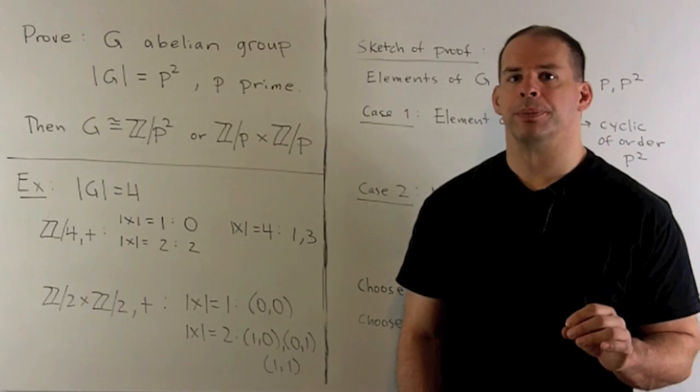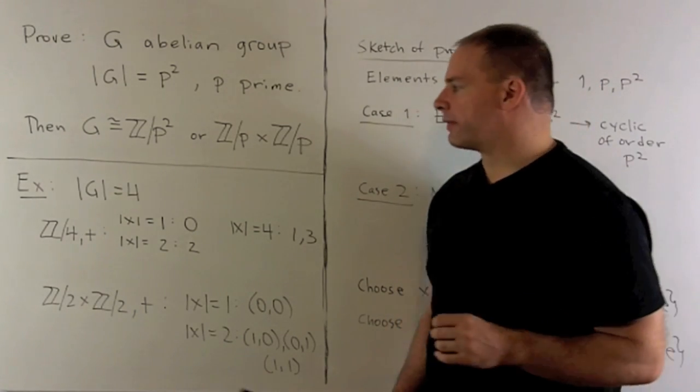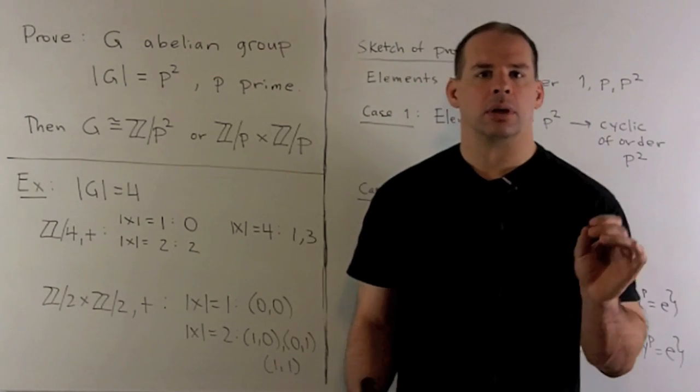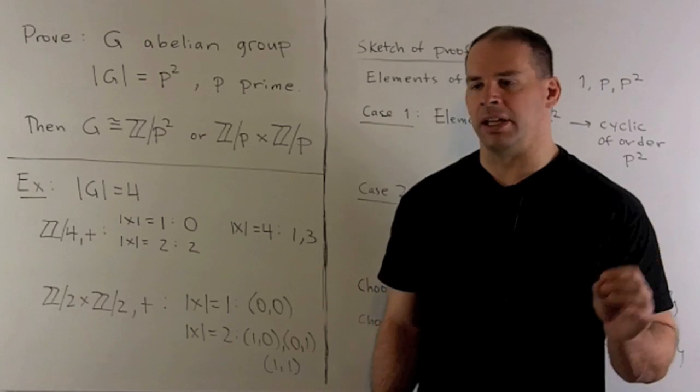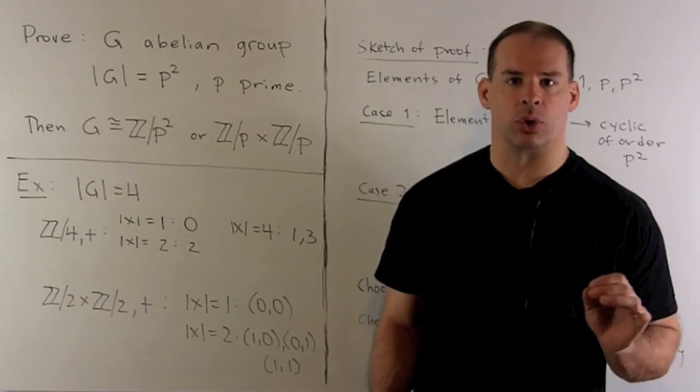Before we prove our result, let's take a look at an example. We'll let p be equal to 2, and the order of our group is 4. This group is supposed to be isomorphic to either cyclic group of order 4 or a product of two groups cyclic of order 2.